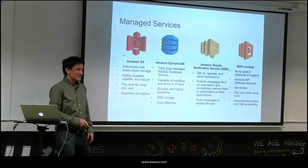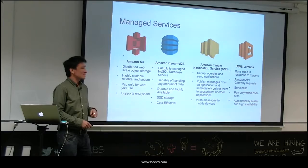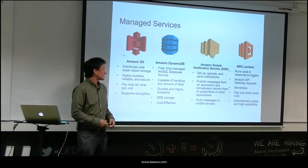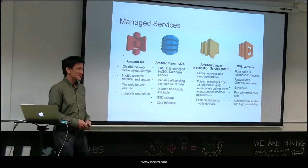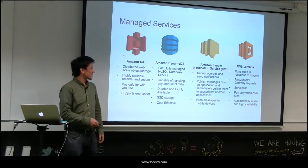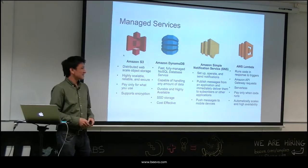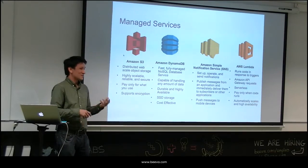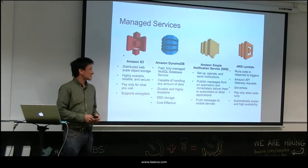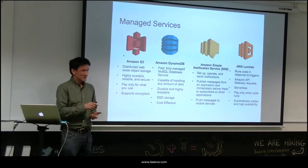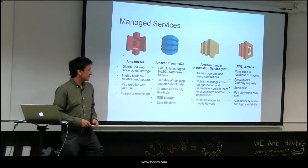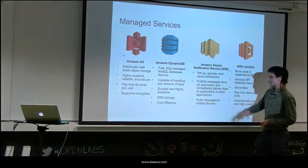DynamoDB is a fully managed NoSQL data store — a key-value pair store where you can provide a specific key and retrieve rows really fast or add new rows. It supports any data volumes and uses SSD storage, so it's very fast. SNS is topic-based: you publish to a specific topic and all subscribers receive the message. It could go to a queue, an email, a text message, and it supports multiple devices including mobile for pushing data.